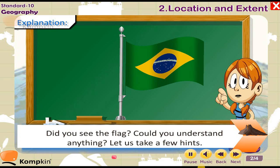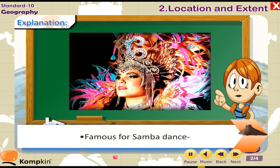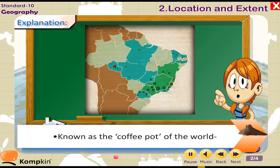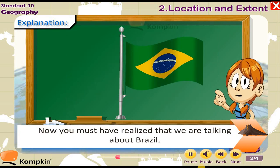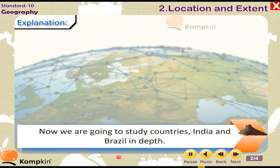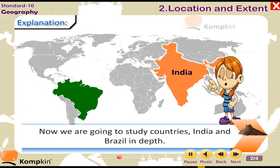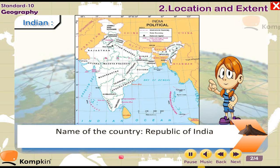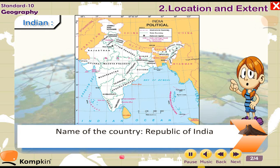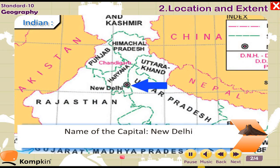Let us take a few hints for the second country: famous for Samba dance, known as the coffee pot of the world, and football is a very popular sport here. Now you must have realized that we are talking about Brazil. We are going to study India and Brazil in depth.